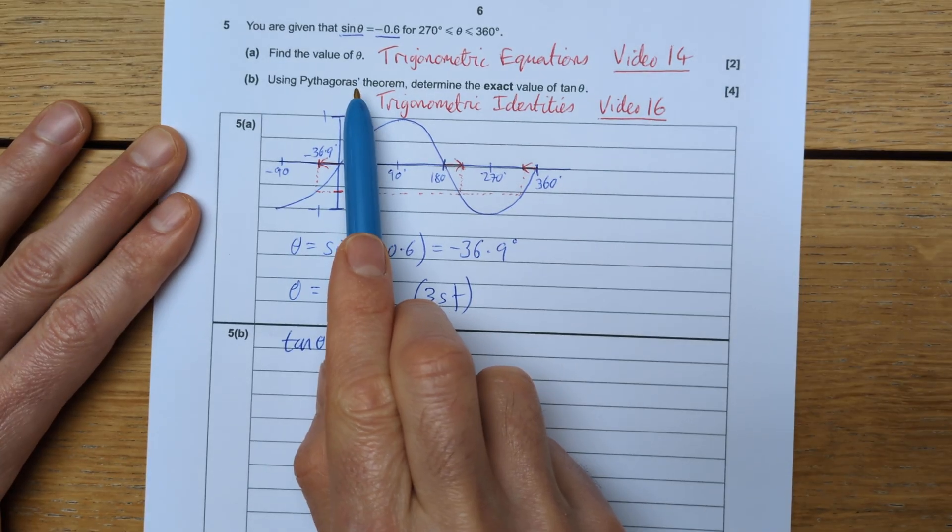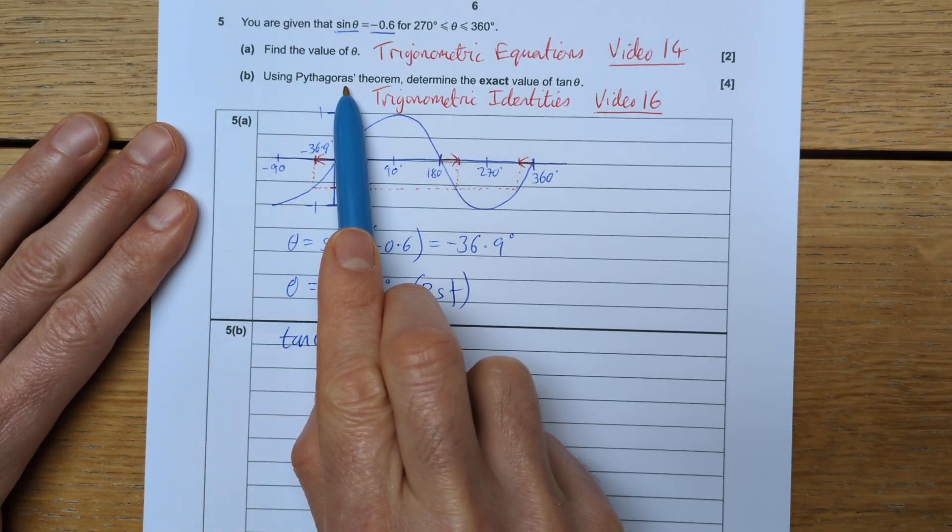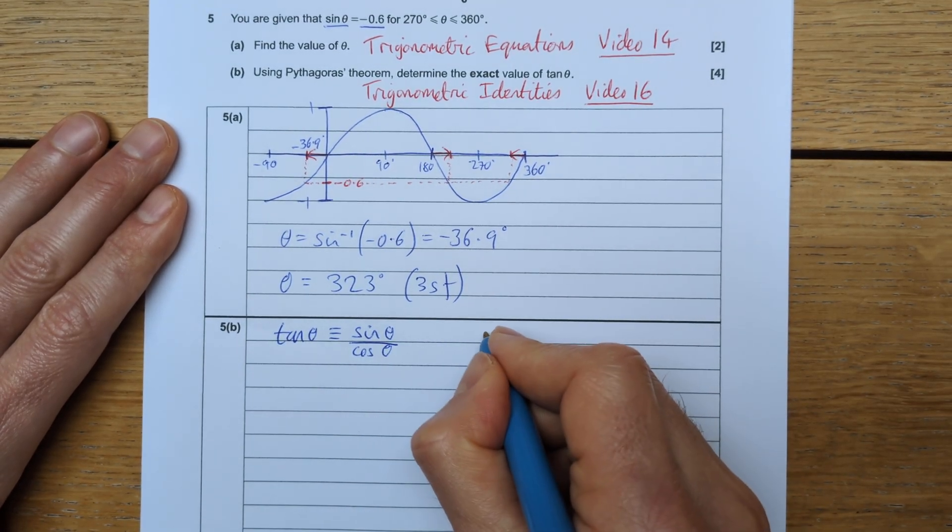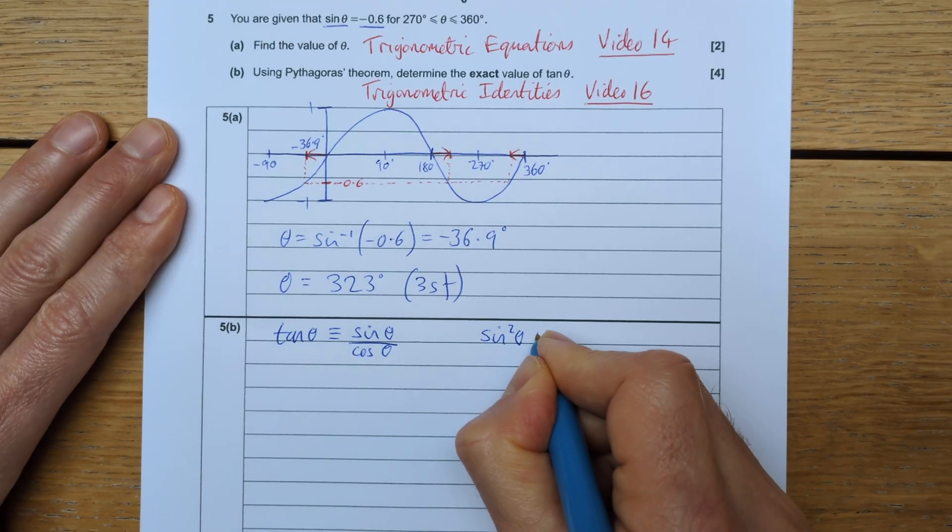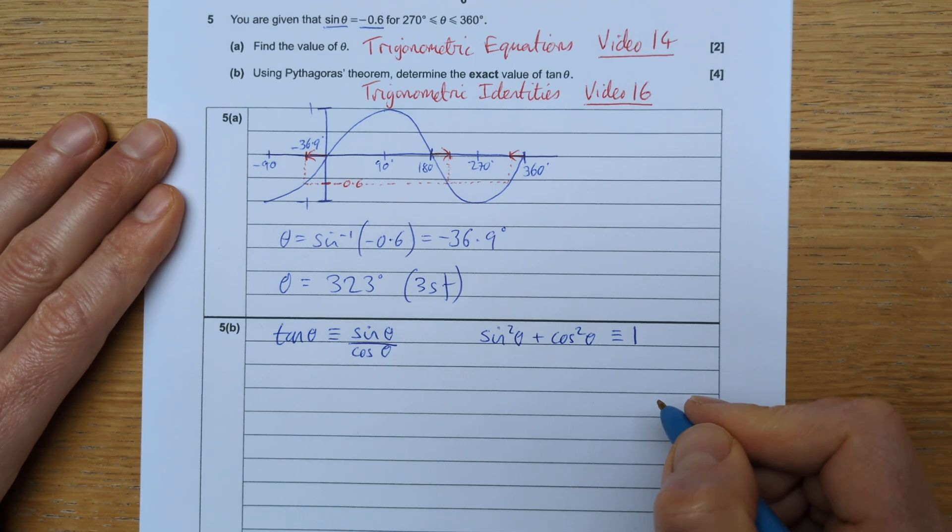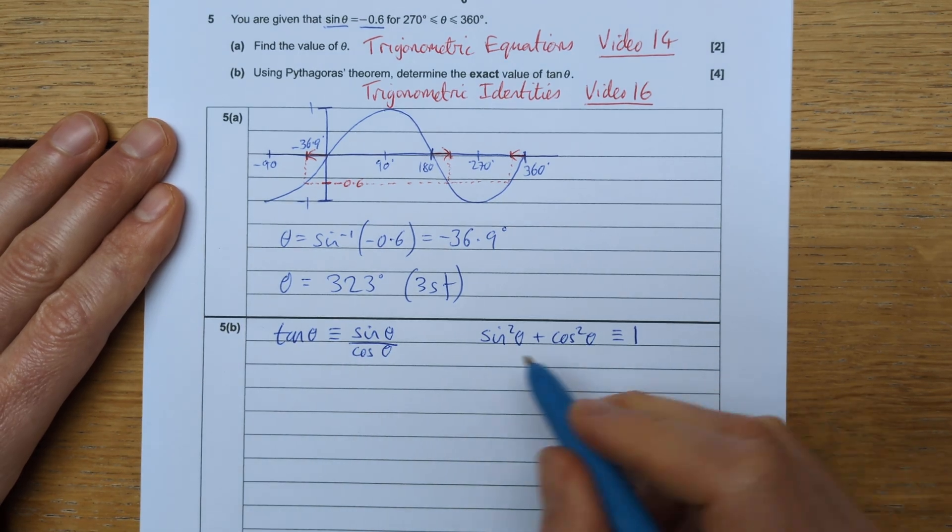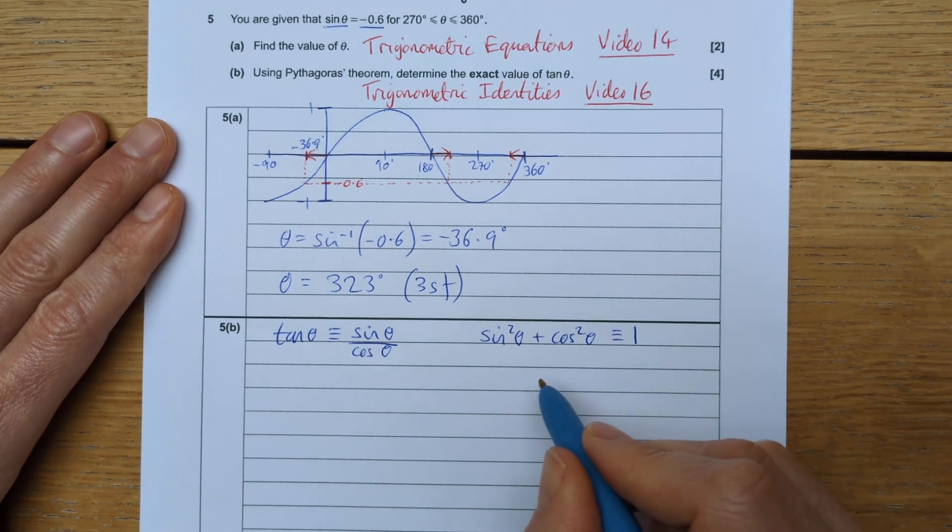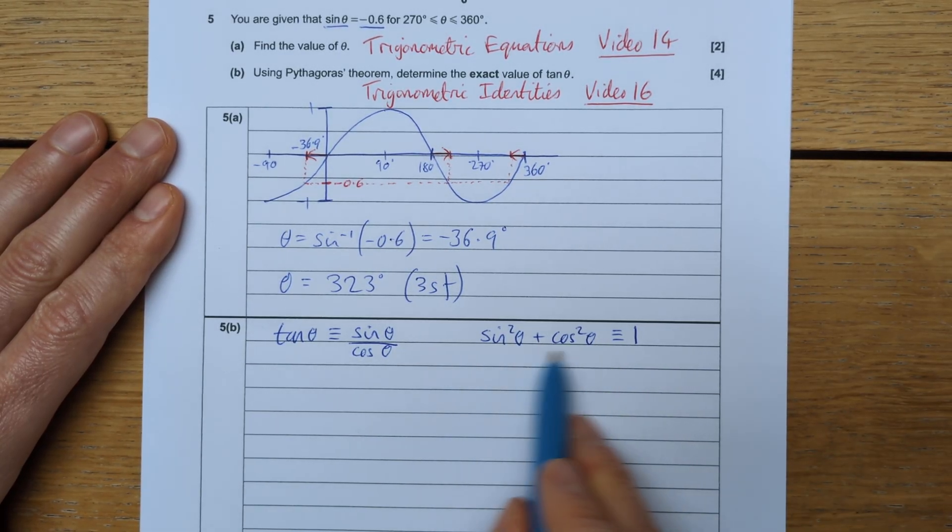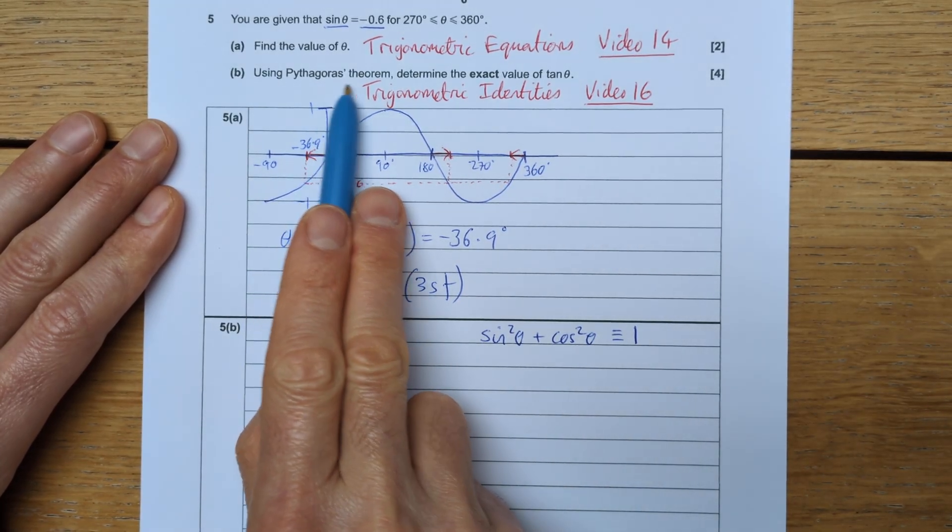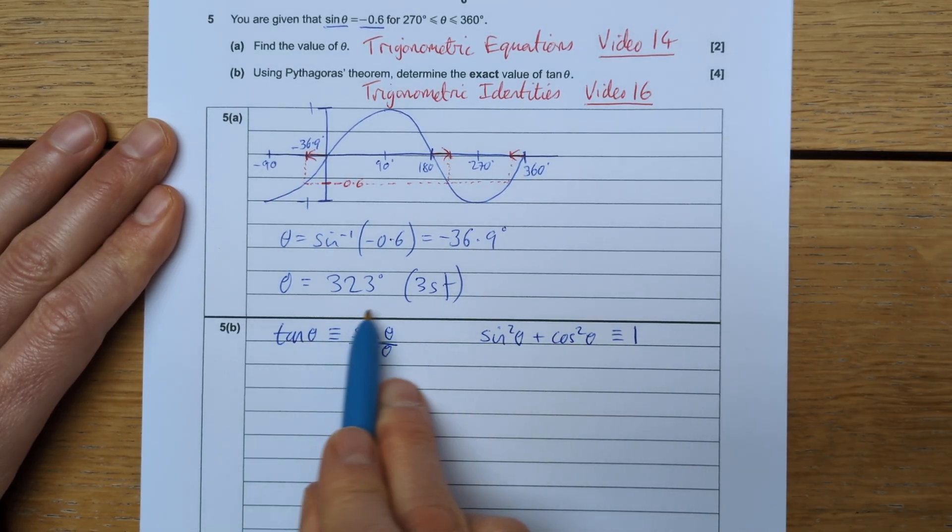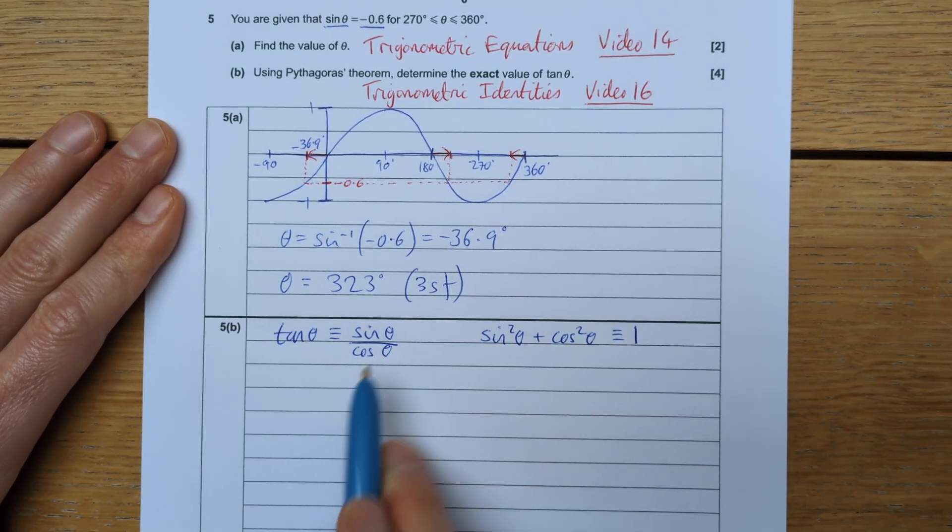Well, Pythagoras theorem is going to help us with this, because Pythagoras theorem gives us one of the trigonometric identities. The trigonometric identity: sine squared of theta plus cosine squared of theta is always equal to one. It's based on the unit circle and applying Pythagoras to the triangle within the unit circle. So we're going to use this, and that will help us find cosine theta, and then we're going to use this identity to find tan theta.